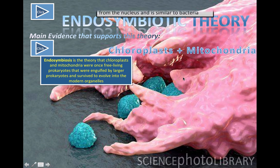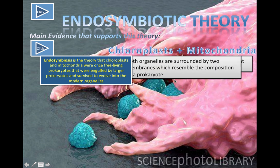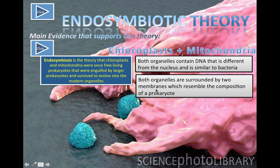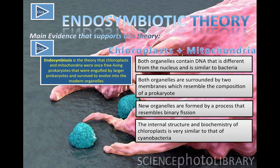If you're not convinced, look at some of the evidence. Mitochondria have their own mitochondrial DNA, which is different from the DNA in the nucleus, and chloroplasts also have separate DNA distinct from nuclear DNA. Both organelles are surrounded by two membranes, resembling the composition of a bacterial prokaryotic cell. During the G1 and G2 growth phases of the cell cycle, mitochondria and chloroplasts are produced in a way that closely resembles binary fission — the way bacteria reproduce. Finally, the internal structure and biochemistry of chloroplasts is very similar to that of cyanobacteria, which are bacteria capable of photosynthesis.